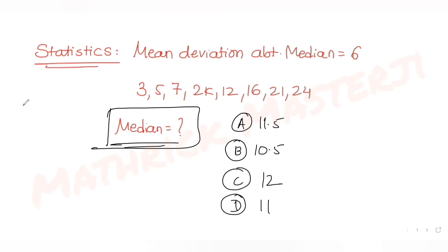Given the list of terms, the median for this list is the average of the two central terms because there are eight terms total. Taking the average: (2k + 12) divided by 2. So I get the median as k + 6.